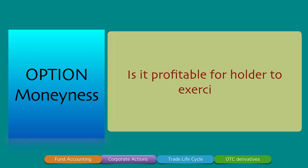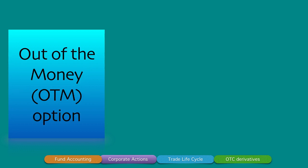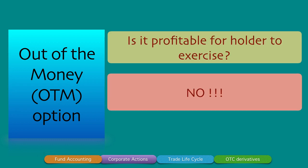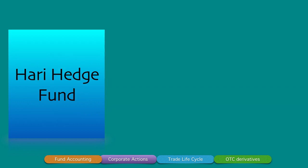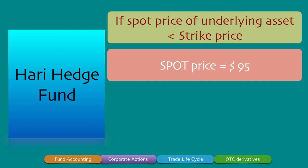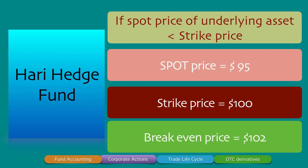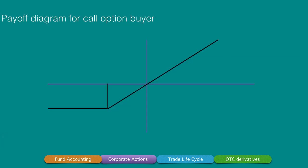For an out-of-the-money (OTM) call option, the question is: is it profitable for the holder to exercise? The answer is no. If the spot price is $95 — below the strike price of $100 — Hari Hedge Fund will not exercise the option, since they would be paying $100 for something available at $95 in the market. The maximum loss to the buyer is the $2 premium paid.